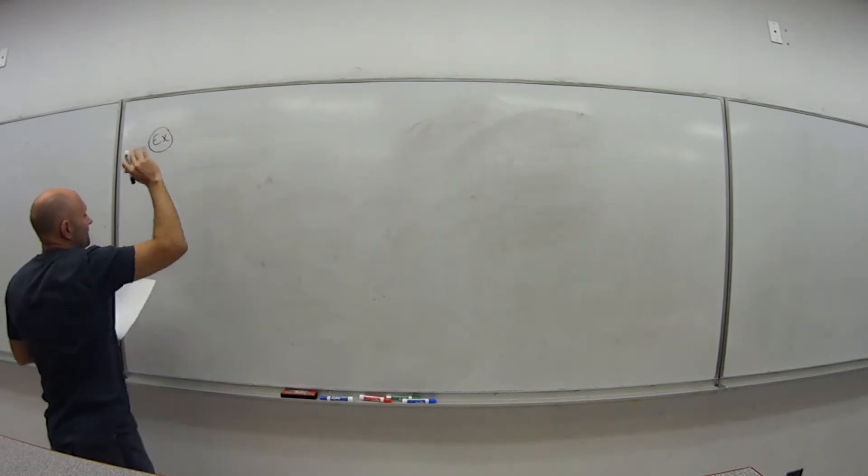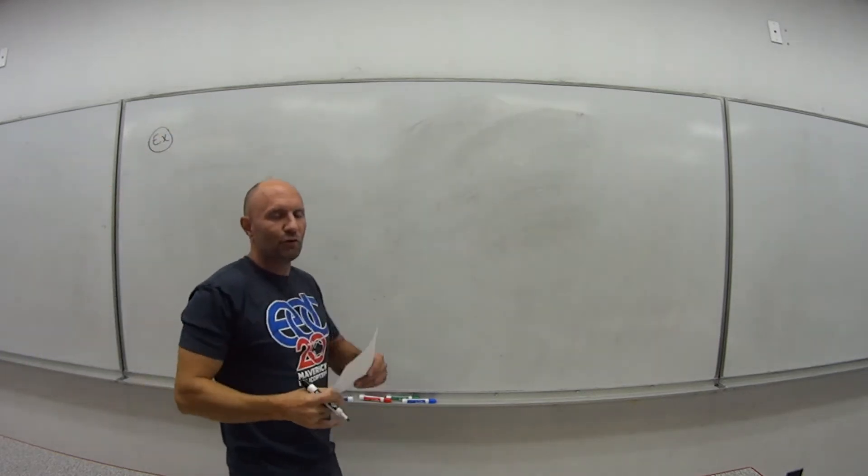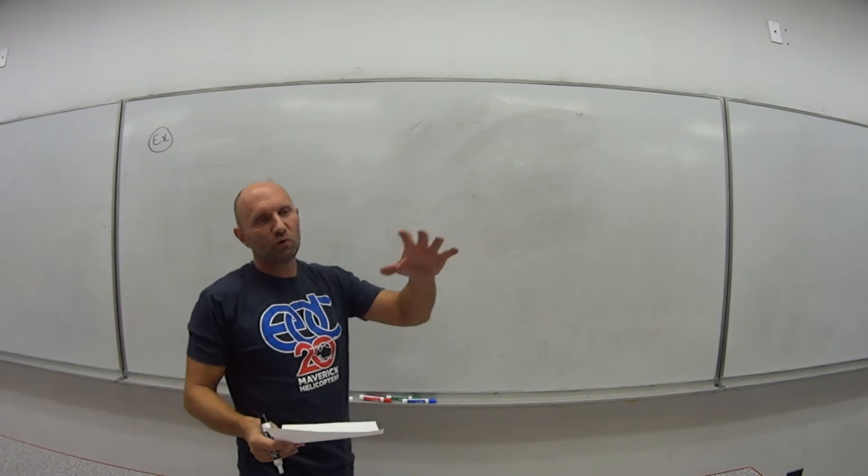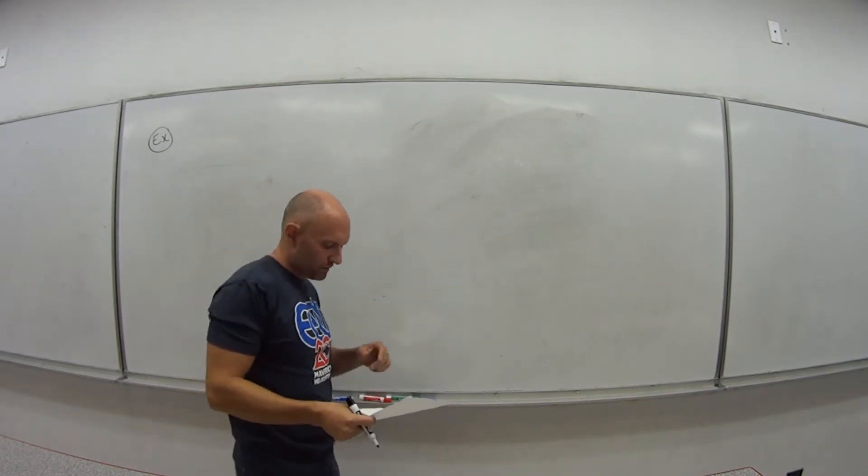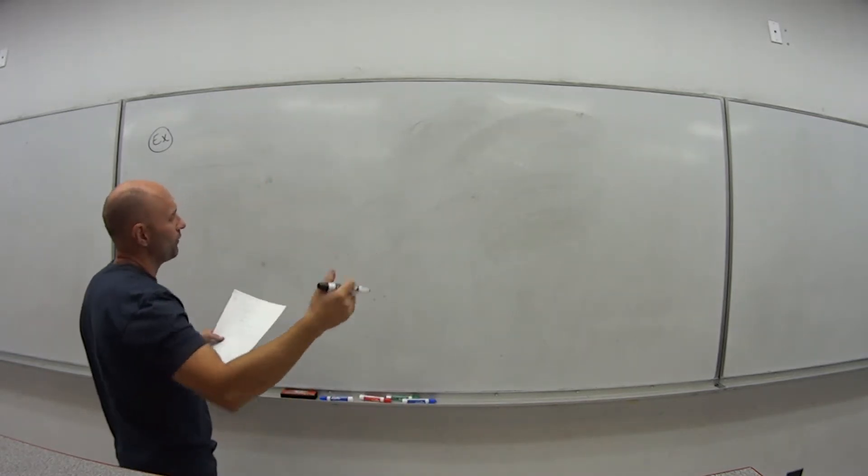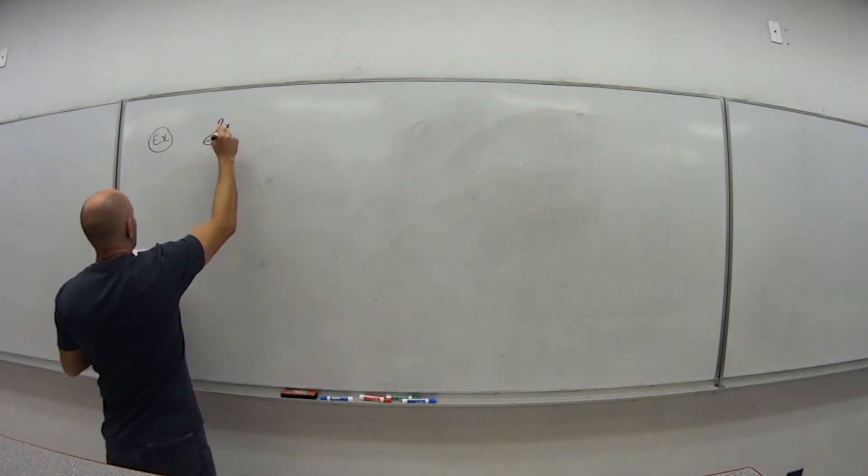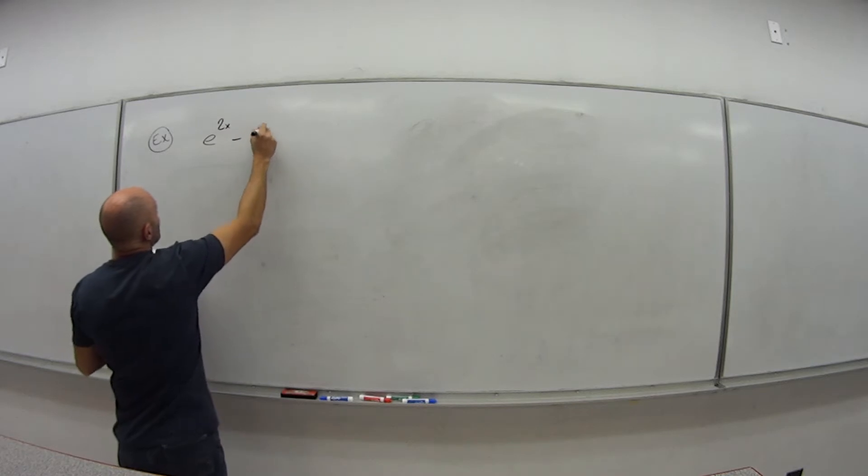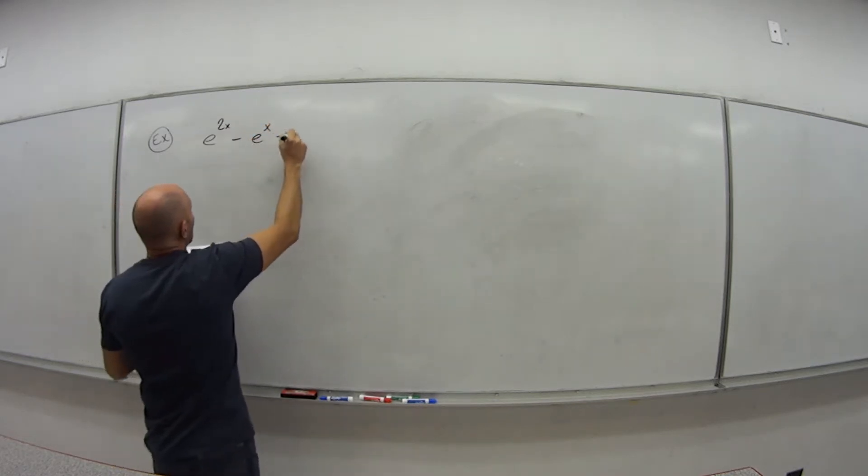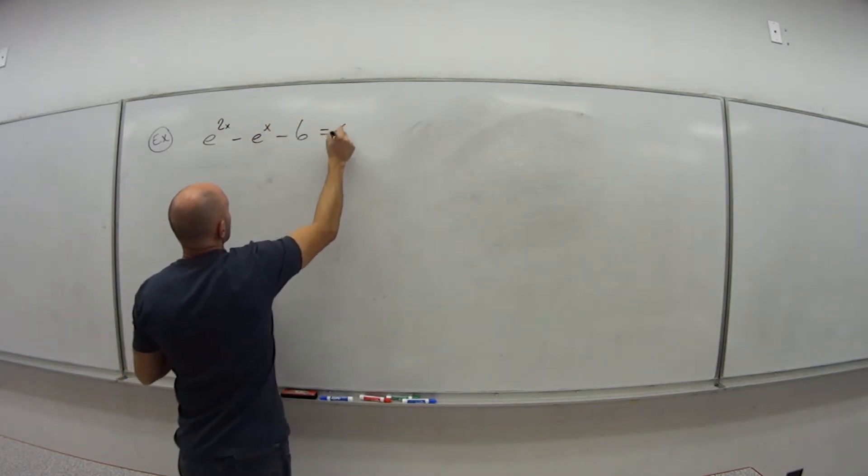This example is a little bit different than the previous two, the solving the exponential equation, solving the log equation, but it still falls into this category. So the example is as follows: e to the 2x minus e to the x minus 6 equals 0.